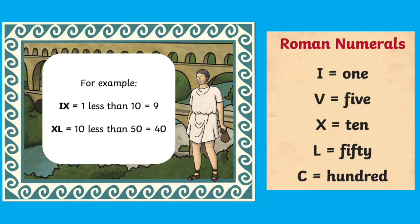Here we've got IX. We know that I is 1 and X is 10, so because the I is in front of the 10 we do 1 less than 10, which is 9.